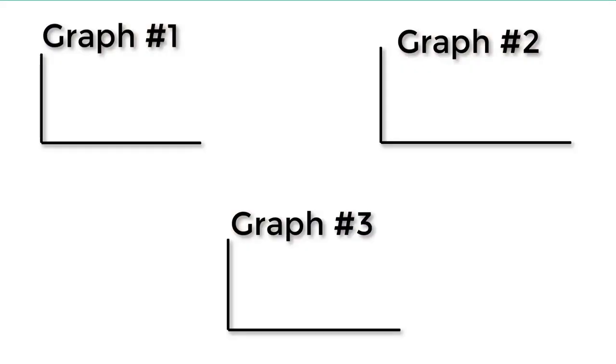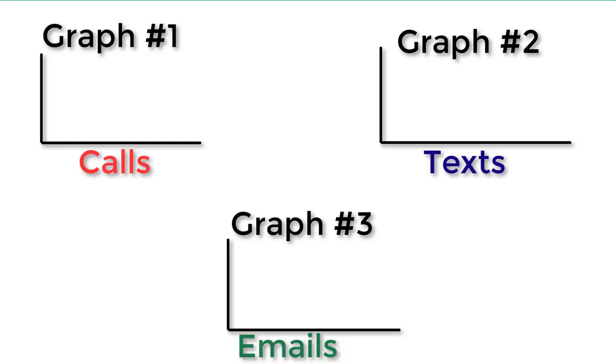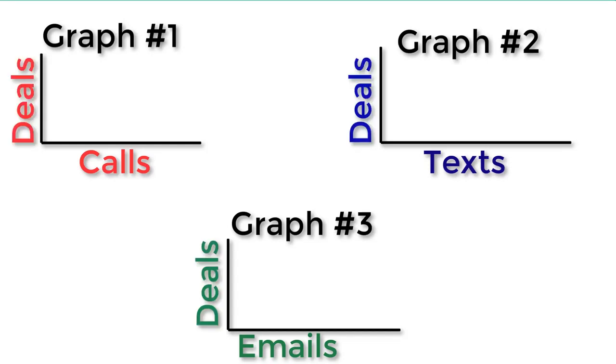Look at your data set for the last six months or a year: how many calls you've made each month, how many text messages, how many emails — how many touches per month. Then look at the number of deals you had each month for that same period. One suggestion: create three different graphs. On the x-axis of graph one, plot number of calls. On graph two, plot text messages. On the third, it could be social touches or emails. On your y-axis on each graph, plot the number of deals for each month, lining up that month's deals with the month's effort on the x-axis. You're creating basically three scatter plots.